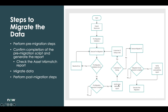If you are satisfied with the asset mismatch report, go ahead and execute the Migrate VI scheduled job. The migration script execution complete message appears in the log once data migration is done. After data migration is done, verify the duplicate vulnerable items report. After successfully completing the data migration, execute the post-migration and configure the new integrations.